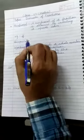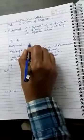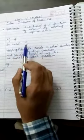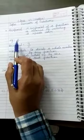Reciprocal of 5 by 9 will be 9 by 5. This is the method to find out the reciprocal of a given number or fraction.